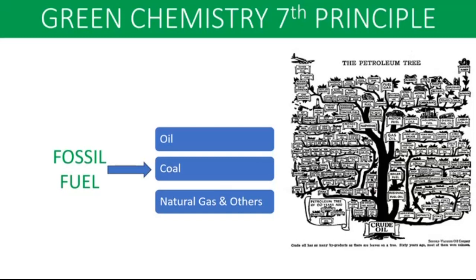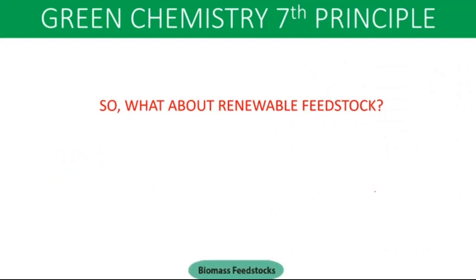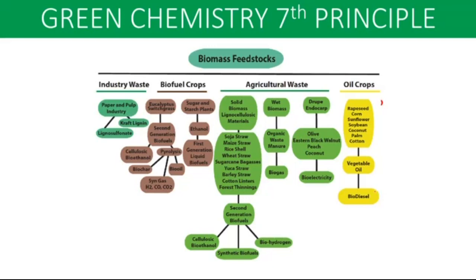Instead of fossil fuel, we can use biomass feedstocks. Biomass feedstocks include: biofuel crops such as sugarcane, eucalyptus, and corn plants; industry waste such as from the paper and pulp industry; agricultural waste including solid biomass and wet biomass; and oil crops such as corn, sunflower seeds, coconuts, and cotton. From oil crops we get vegetable oil, which can be further converted into biodiesel.